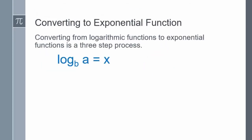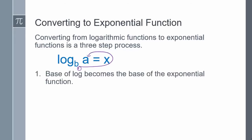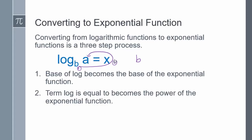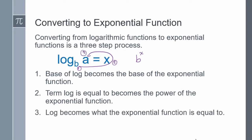Converting to exponential form follows a similar three-step process as converting to logarithmic form. Step one: the base of my log becomes the base of the exponential function. Our log base is b, so that is the base of my exponential function. Step two: the term the log is equal to becomes the power of the exponential function — my log is equal to x, which is now the power. Step three: the log becomes what the exponential function is equal to. So my log is a, meaning my exponential function is equal to a.